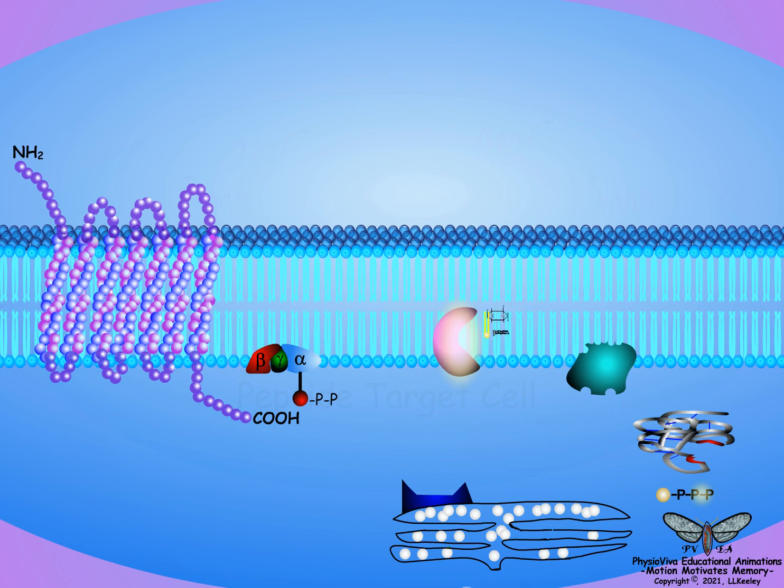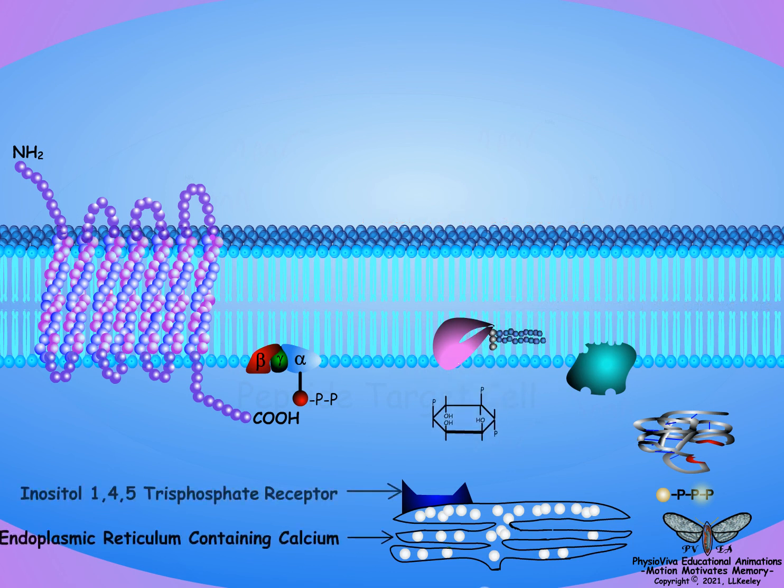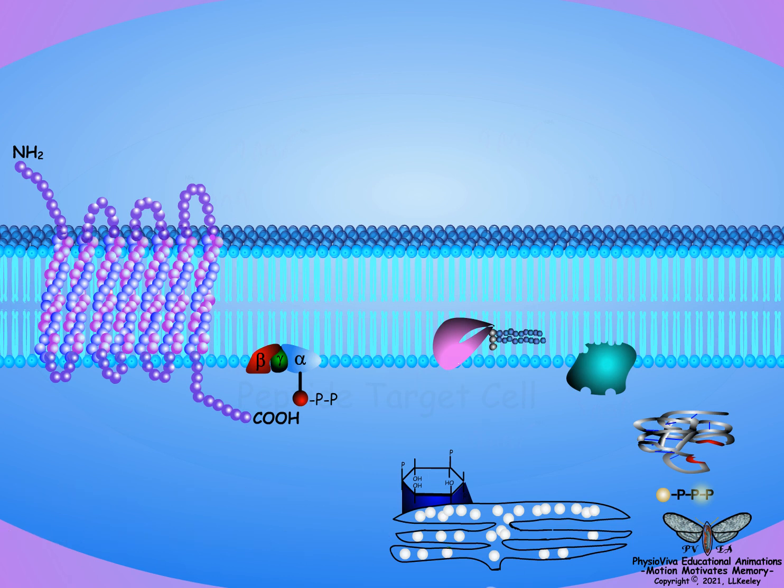Activated phospholipase C degrades phospholipids that make up the plasma membrane to produce two second messengers: inositol-1,4,5-trisphosphate and diacylglycerol. The inositol-trisphosphate is released from the membrane and binds to a receptor on the endoplasmic reticulum. This intracellular signal results in the release of calcium stored within the endoplasmic reticulum.